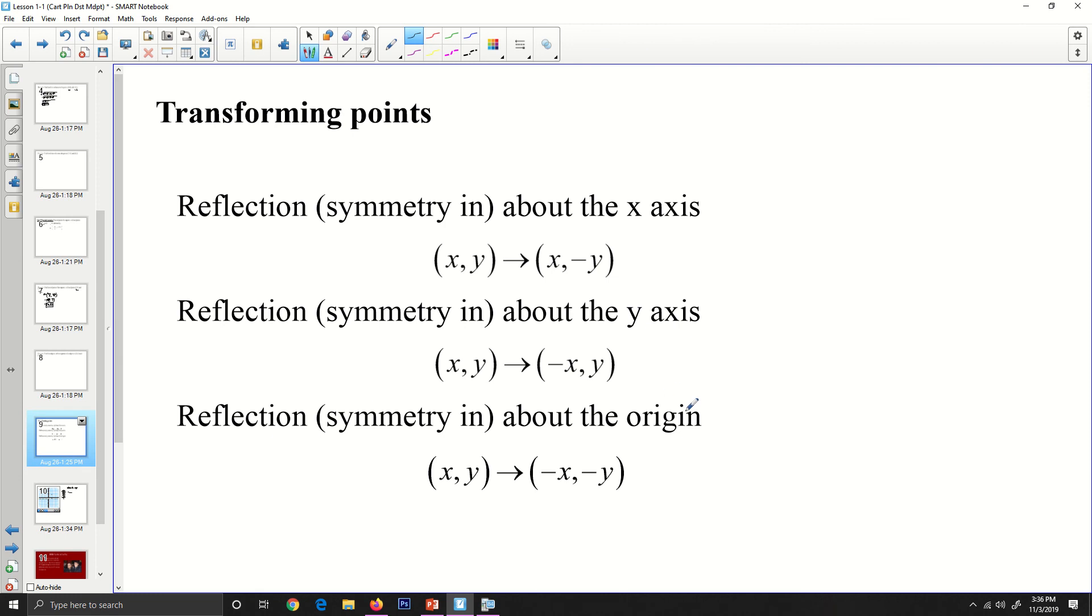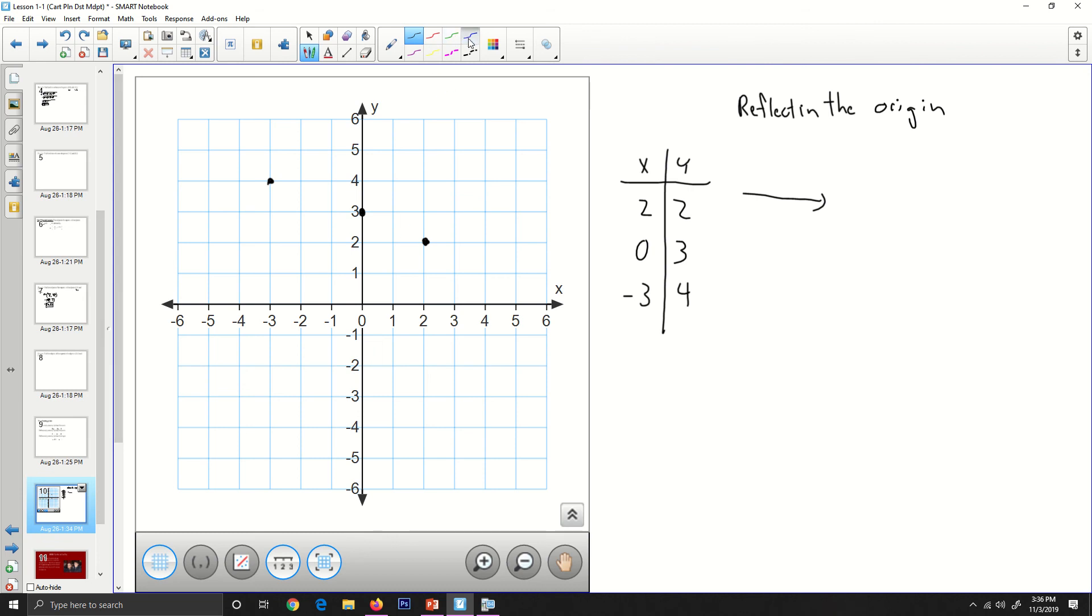And if we go back, a reflection about the origin means that for every point x, y, our new point will be negative x, negative y. So let's pick another color. Let's pick blue. And so we're going to change our new point, and when you're reflecting about the origin, you're changing the sign of both the x and the y-value. So negative 2, negative 2. 0, again, is neither positive or negative, but we do have to change the y. And this negative 3 changes to positive 3, and this positive 4 changes to a negative 4. So our new points reflected in the origin, we have negative 2, negative 2, we have 0, negative 3, and we have the point 3, negative 4. And those are our reflected points about the origin.